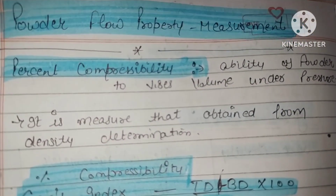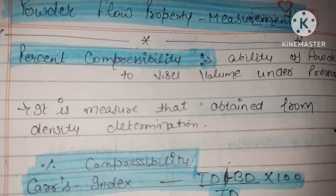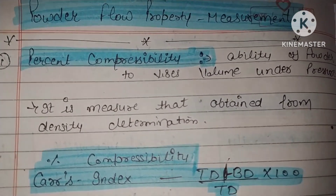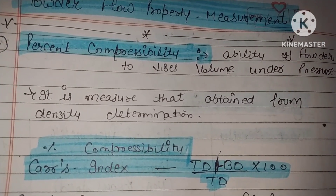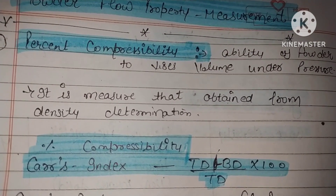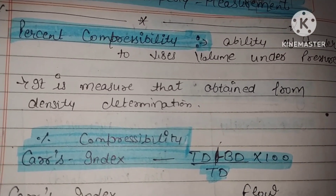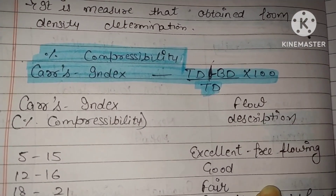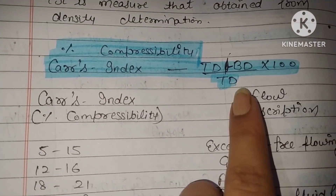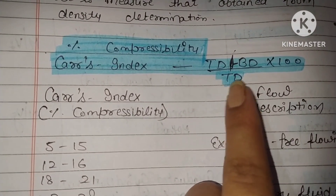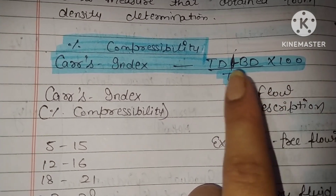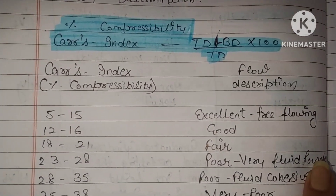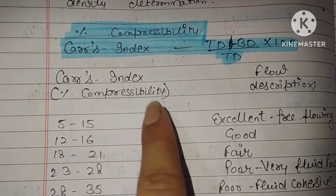Now, powder flow property measurement — let's talk about percent compressibility. It is the ability of powder to decrease in volume under pressure. This is called Carr's Index. The formula for Carr's Index is: (TD - BD) / TD × 100, expressed as a percentage.